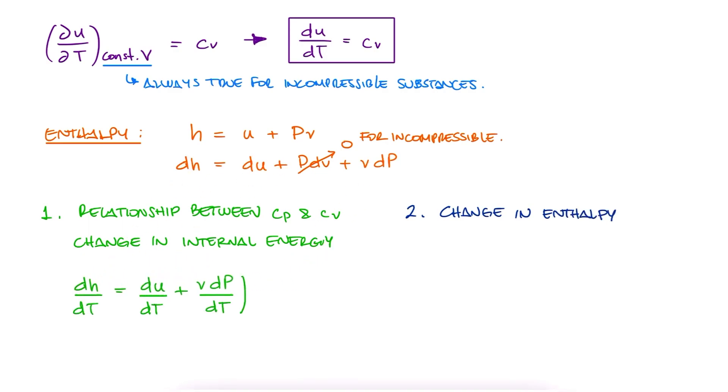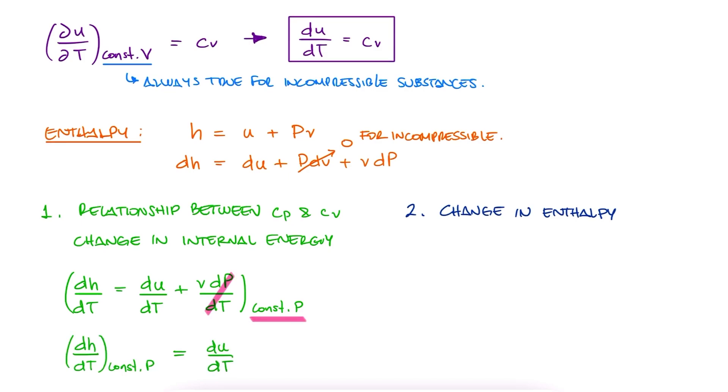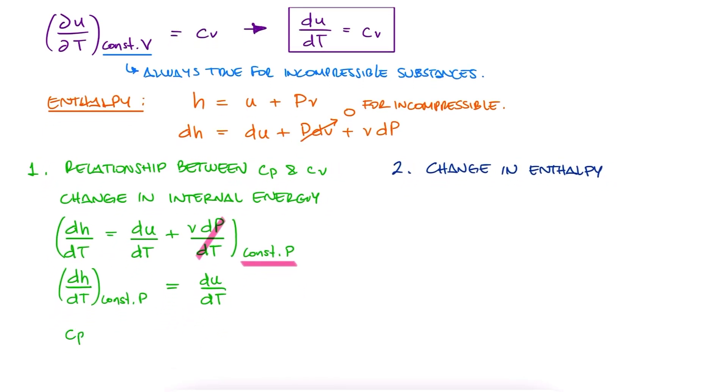Differentiating with respect to t at constant pressure, we get dh/dt, constant pressure, equal to du/dt. On the left, that's our definition of cp, and on the right, our definition of cv.